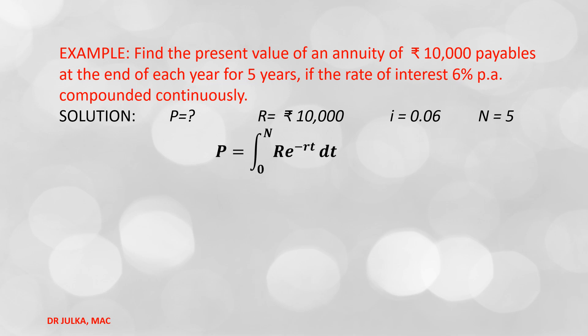In case interest is compounded continuously, the formula for present value is P = integration of R · e^(−rt) with respect to dt, with limit 0 to n. Putting R = 10,000, r = 0.06, and n = 5, after calculation we get the value of P = Rs. 43,196 and 96 paisa.